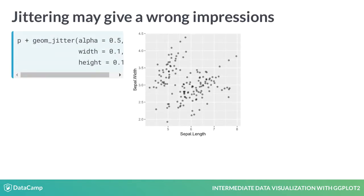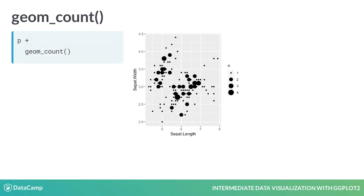We should always mention that we've jittered our data because of this. To avoid this problem, we can use another variant of geom_point. geom_count counts the number of observations at each location and then maps the count onto size as the point area. Our data is mapped onto the area of the circle as opposed to its radius, since we more intuitively perceive area than radius.